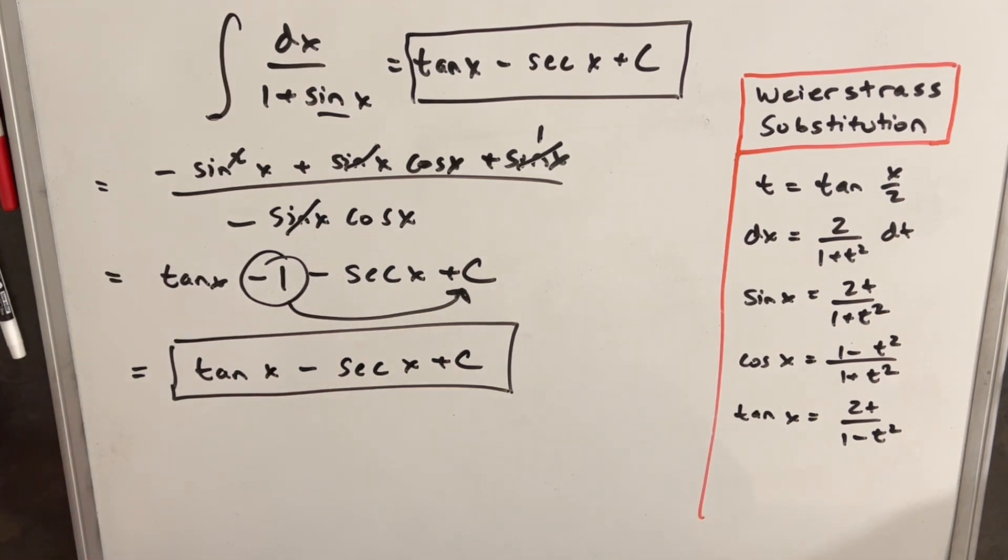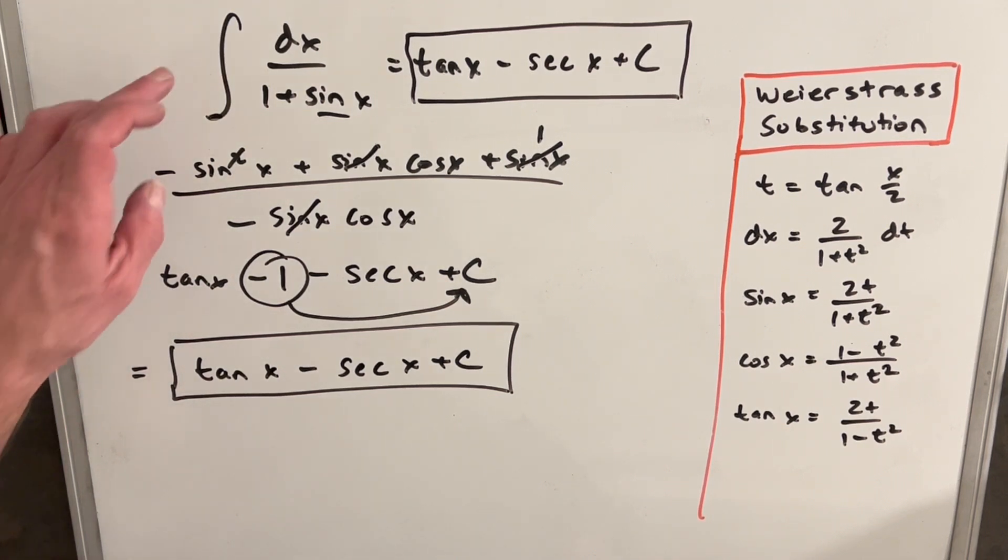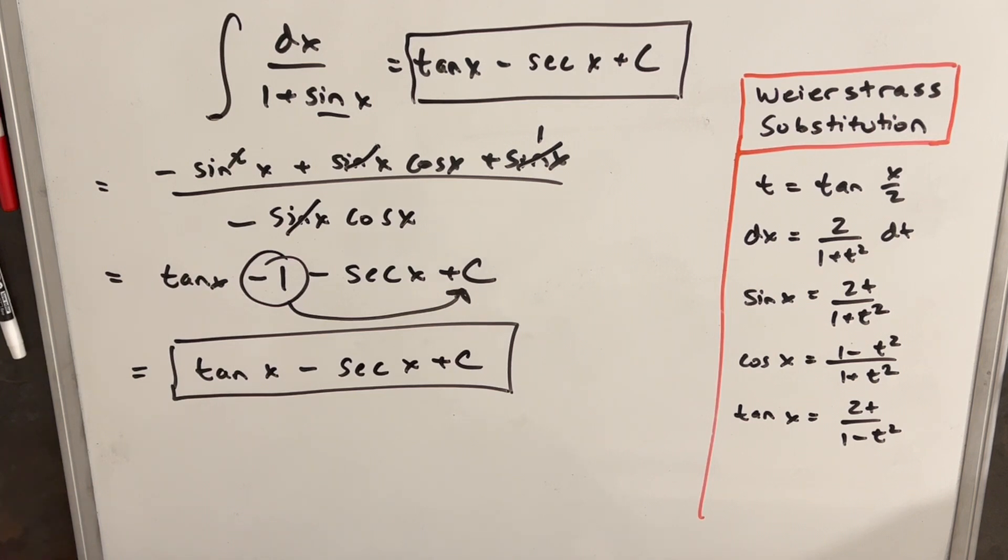Again, this was MIT Integration Bee 2018, problem number nine. I also have a quiz with a lot of Weierstrass substitution problems. I'll provide a link to that in the description. Thanks for watching. Please like and subscribe. Have a great day.